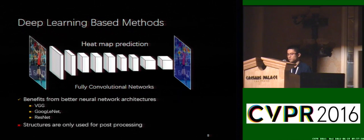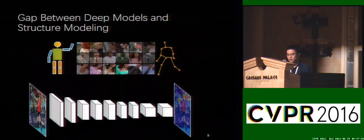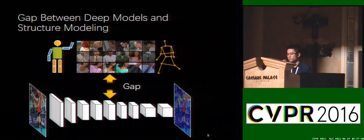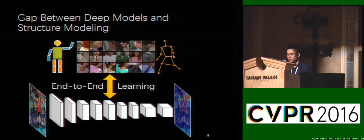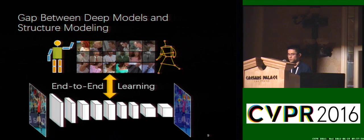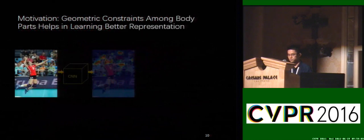However, geometric constraints between body parts are usually missing or only used for post-processing. Since the features and structural models are not independent, these two parts may produce sub-optimal solutions. Hence, in this work, we bridge the gap between deep models and structural modeling by incorporating the deep models and the expressive mixture of parts models into an end-to-end framework.